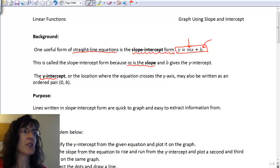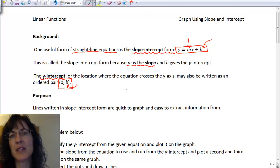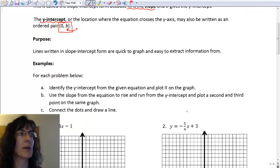The y-intercept comes from putting the b into an ordered pair, where the b is the y part and the zero is in the x part. Lines written in slope-intercept form are quick and easy to graph and easy to extract information from.